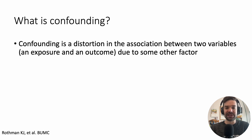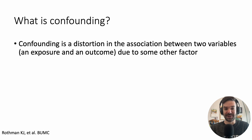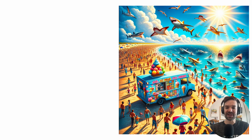You're thinking that doesn't sound right, and probably the reason why is because you have an idea of what confounding is. Confounding is a distortion in the association between two variables — an exposure and an outcome. In this case, internal medicine residency is the exposure, my gray hair was the outcome, due to some other factor. So the question is, what was that other factor?